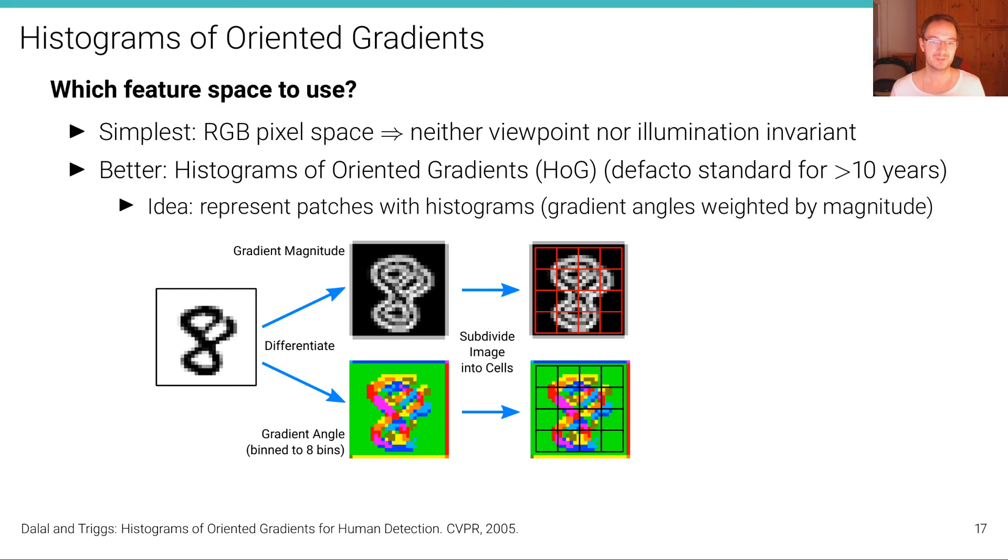Now, the next step, what we do is we subdivide that image into cells. Cells are regions, subregions of the image of a certain pixel width and height. For example, in this case here, eight by eight or six by six pixels. And after that, for each of these cells, we compute a histogram where we sum up the weights for each of the angles that are contributing to this histogram.